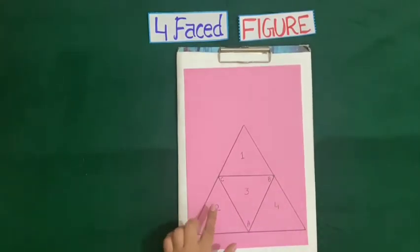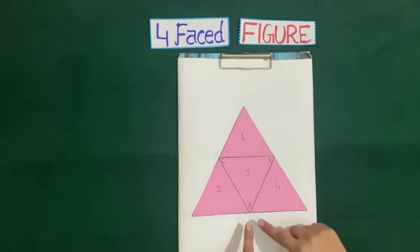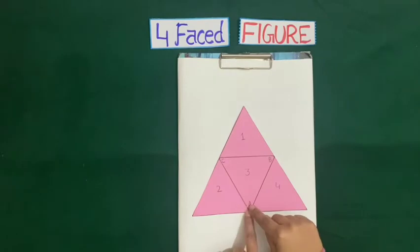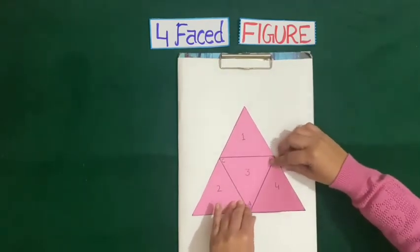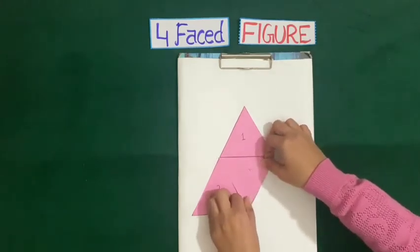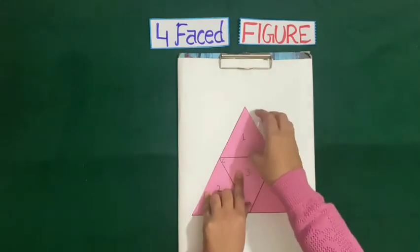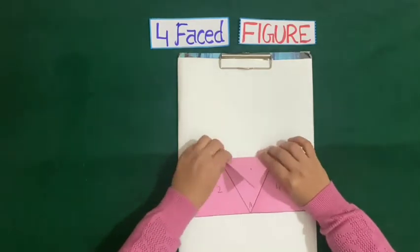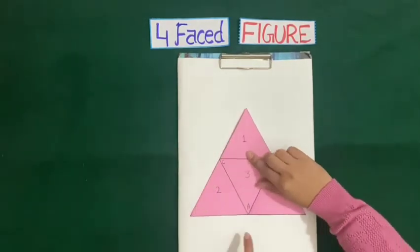Now we will cut this figure with help of scissor. Now we will fold the paper along the sides A-B, B-C and A-C. So first of all we will fold along A-B, then B-C, then B-C again, and now A-C.